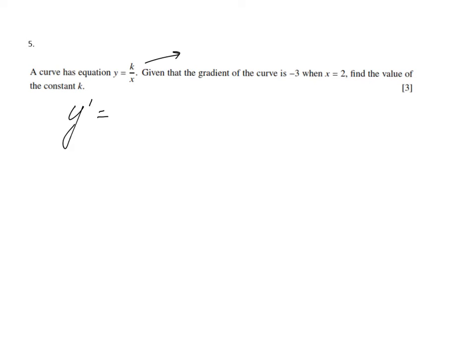What is the derivative? Perhaps some of you want to rewrite it first like this, so y equals k times x to the power minus 1. Then to find the derivative, you do the index times the coefficient, so minus 1 times k becomes minus k times x to the power minus 2. I always prefer the positive index notation, so minus k over x squared.